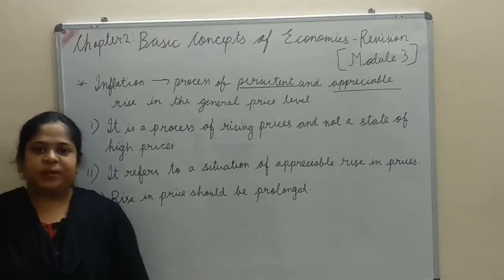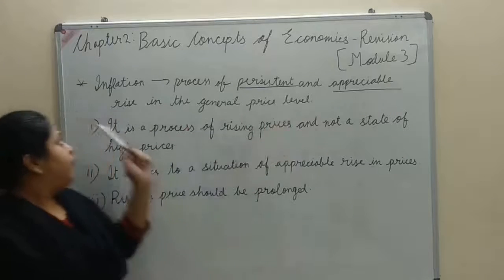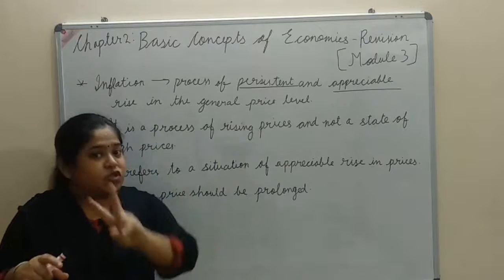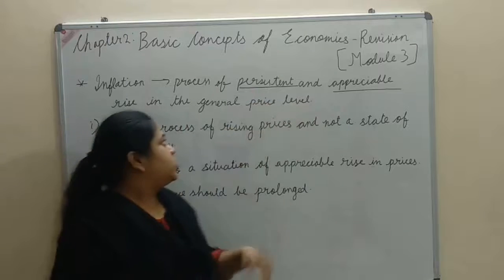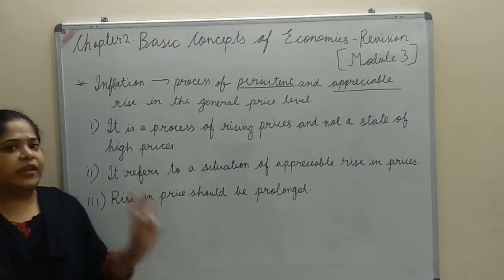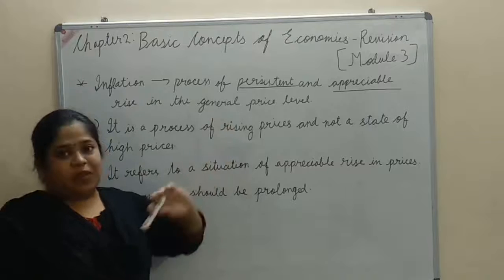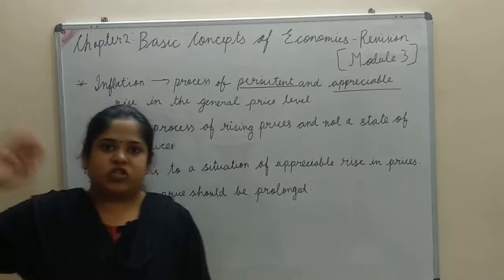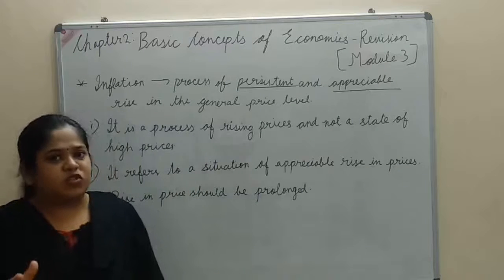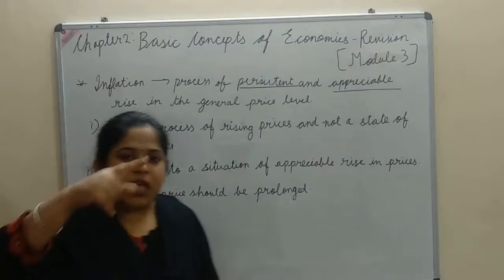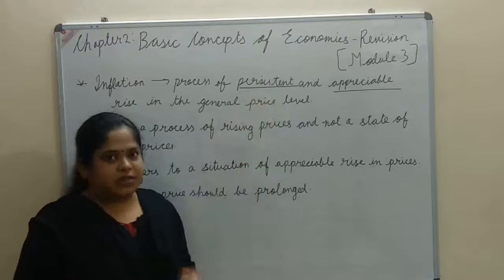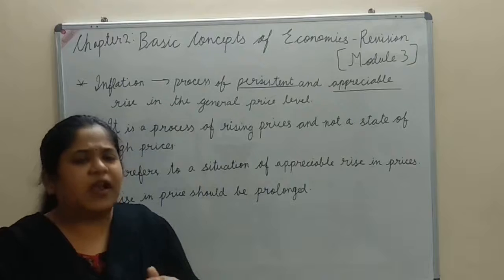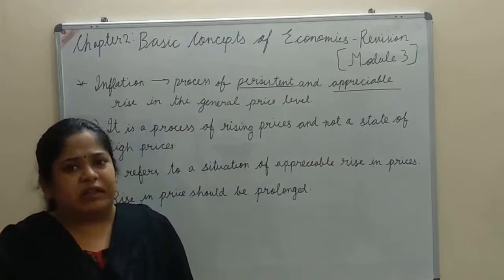Inflation is the process of persistent and appreciable rise in the general price level. There are two keywords: persistent and appreciable. Persistent means the price rise should be continuous and prolonged in nature. For a rising price level to be called inflation, there must be continuous increase. Appreciable means a price rise from 10 to 12 will not be called inflation.